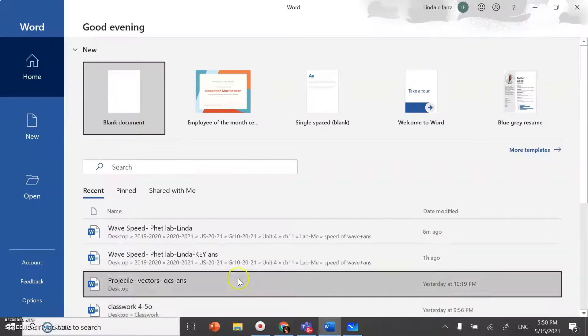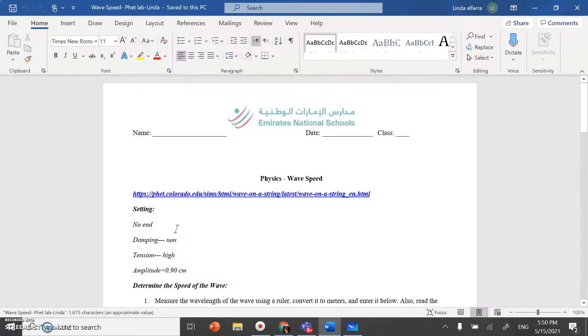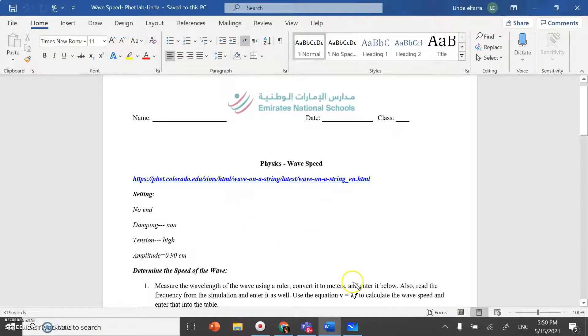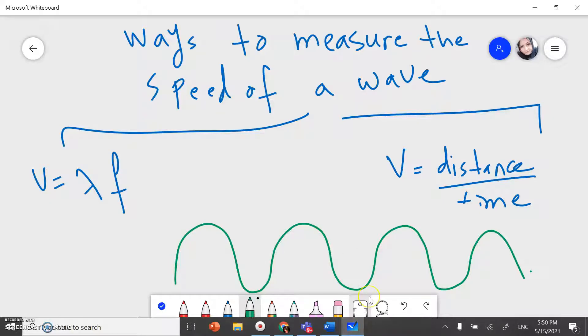I would like you to go to MS Teams and download this document. We are going to use two ways to measure the speed of a wave. The first one, using this formula: speed equals wavelength times frequency. And the second one, using the formula distance over time.